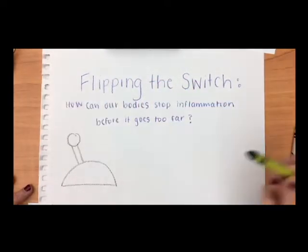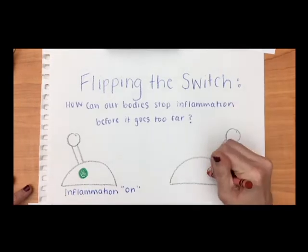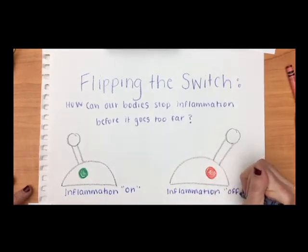Inflammation is an important way our bodies fight infections, but too much inflammation can be a bad thing. How does our body know to flip the switch and turn off inflammation?